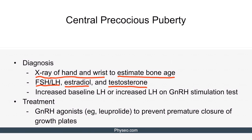If GnRH administration increases the LH levels, it indicates central precocious puberty due to the predictable effect of GnRH on LH levels. The treatment is with GnRH agonists like leuprolide. Exogenous GnRH administration will downregulate GnRH receptors on the pituitary gonadotrophs and therefore will reduce FSH and LH levels. As a result, estrogen levels will be decreased in both girls and boys. Since estrogen closes the epiphyseal growth plates preventing further linear bone growth, GnRH agonists will allow the patients to grow in height.